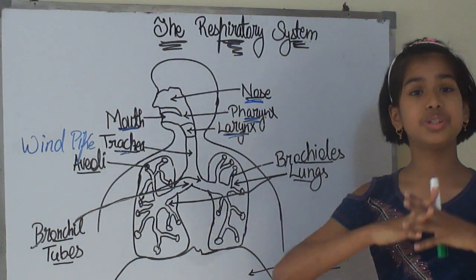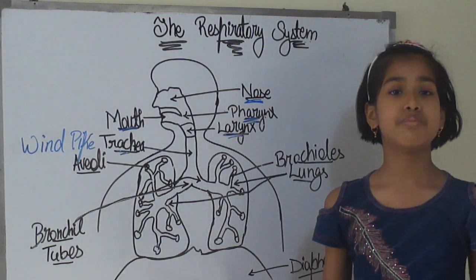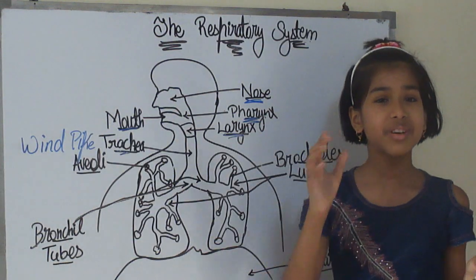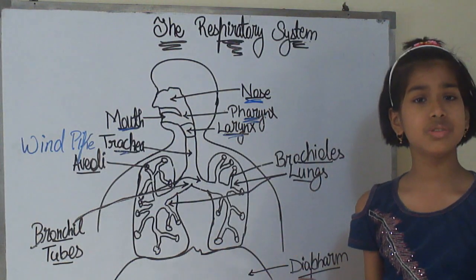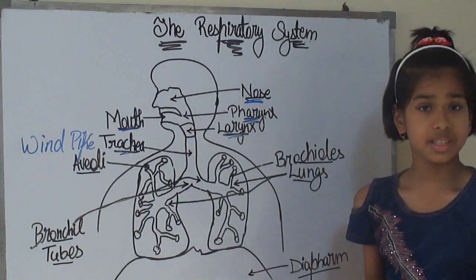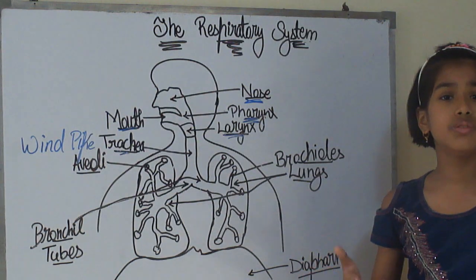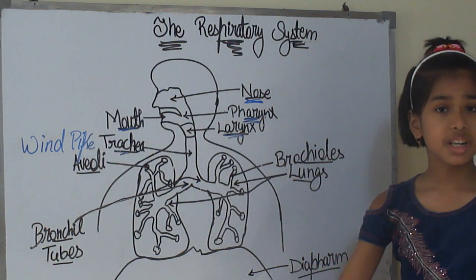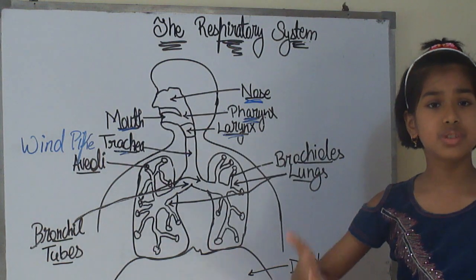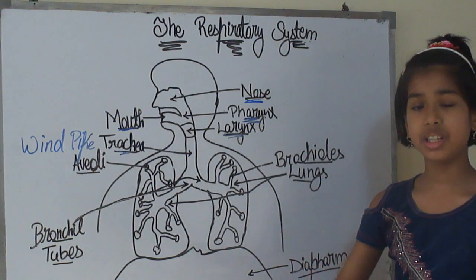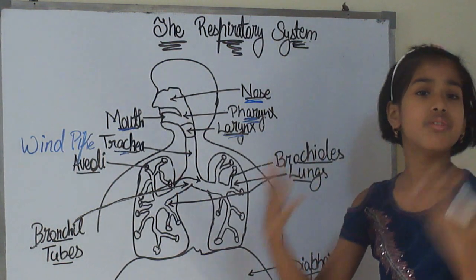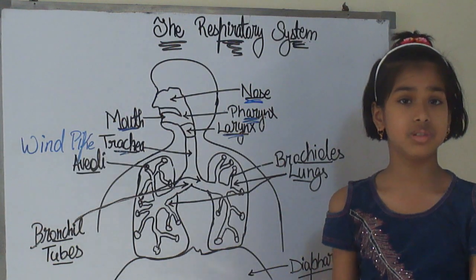Then, alveoli transports that oxygen in our body. Now, I think you have a question. Why do we need to breathe in oxygen and why do we need to breathe out carbon dioxide? And why we do that only? Why can't we breathe carbon dioxide and give out oxygen?